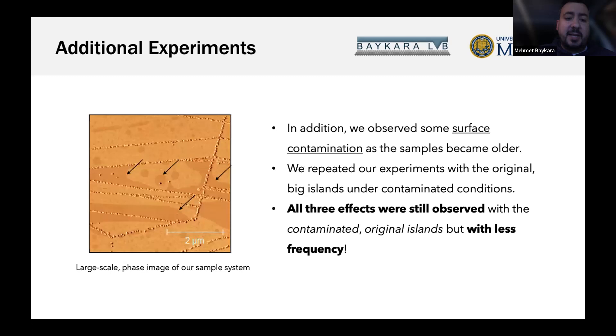We also observe dynamic contamination layers on these samples. Remember, experiments are done under ambient conditions, typically after a month or month and a half. This phase image shows dark regions which are a dynamic contamination layer, only a few angstroms high - probably molecules lying down on the surface in a monolayer. Some experiments are done on fresh samples without these contaminations right after synthesis, and some after several months when islands are contaminated.